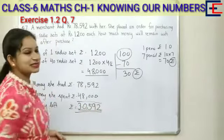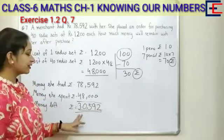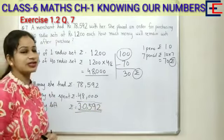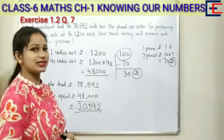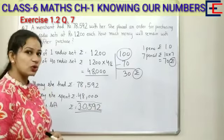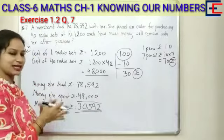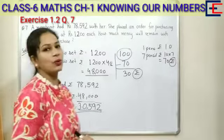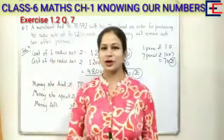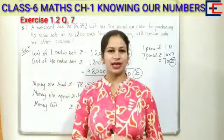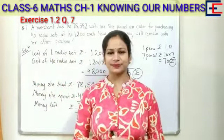How much money is left? 30,592 rupees. The merchant has 30,592 rupees remaining. Okay, let's proceed to our next question.